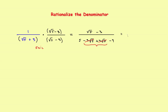So what that leaves you with is the square root of 5 minus 3 over 5 minus 9, which is negative 4. Your goal was to get the square root out of the denominator, and you accomplished that by multiplying by the conjugate. When we rationalize the numerator, we'll multiply by the conjugate of the numerator instead — but whatever you do to the top, you've got to do the same to the bottom.